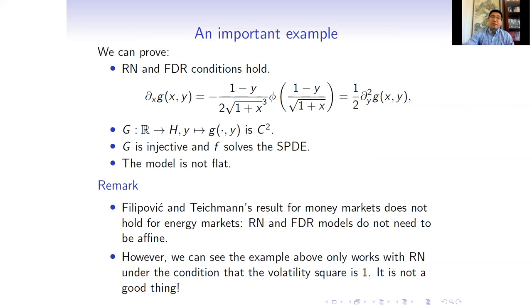That is, the vector space generated by the manifold is infinity-dimensional. Then, we have two important remarks. Filipovic and Teichmann's result for money markets does not hold for energy markets. RN and FDR models do not need to be affine. However, we can see the example above only works with RN under the condition that the volatility square is one. It is not a good thing.